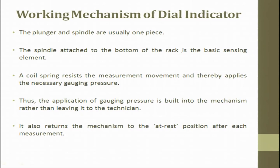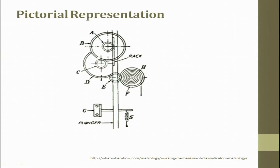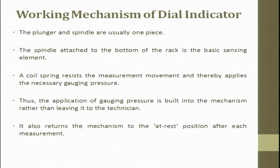The plunger and the spindle are one piece. The spindle attached to the bottom of the rack is the basic sensing element. Here is a rack and a pinion — when you push the plunger, the rack moves, then the pinion moves; if you have a pointer on the pinion it also moves. A coiled spring resists the measurement movement and thereby applies the necessary gauging pressure. When the plunger goes up, there must be resistance, so we use a coil spring. The amplification of the gauging pressure is built into the mechanism rather than leaving it to the technician.